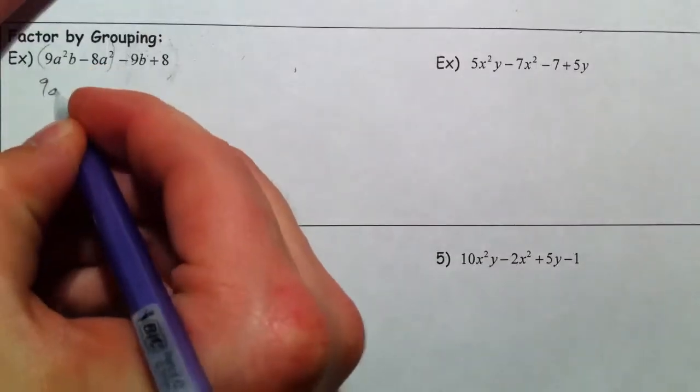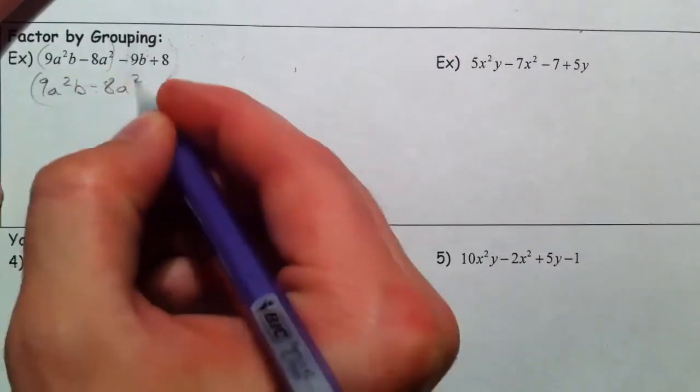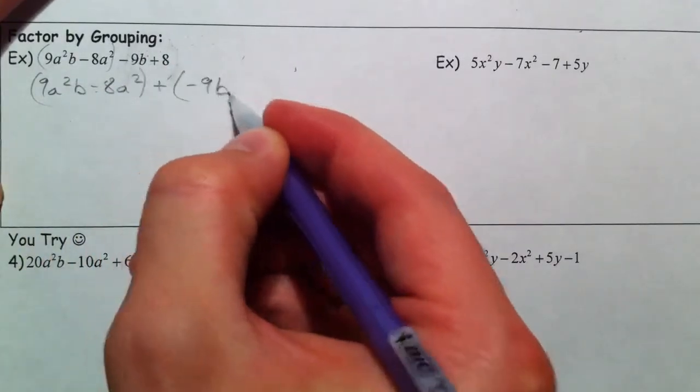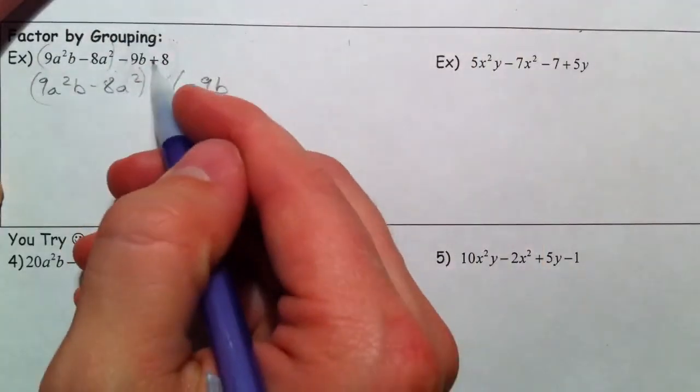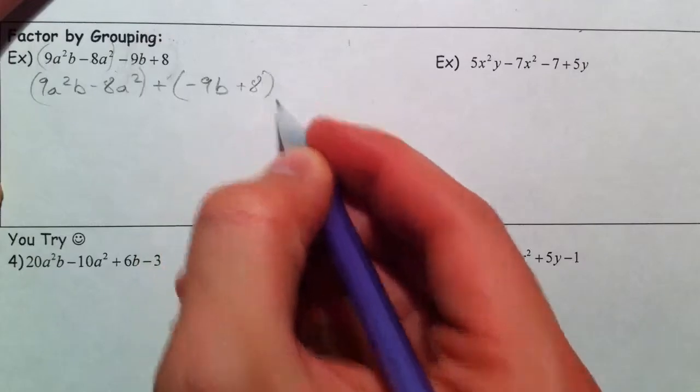And so what I usually do is, I'll rewrite it here so we have it: a squared b minus 8a squared, and I suck the minus in with the 9. So I almost always have to take it out, and you're welcome to change the sign if you want, but mistakes happen when we do that, so I just usually group it like that.